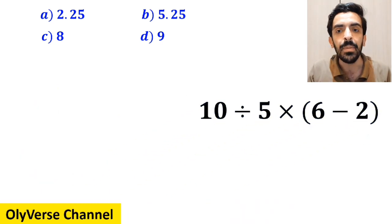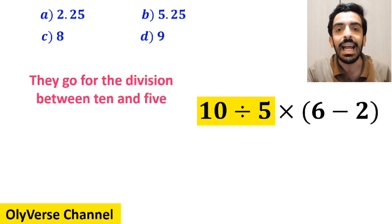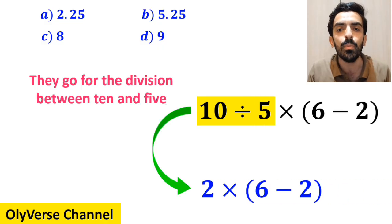And the next step they go for the division between 10 and 5 and this expression simplifies to 2 multiplied by 6 minus 2 inside the parenthesis.